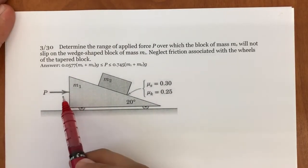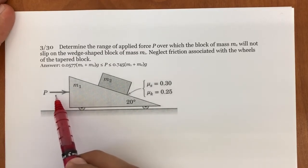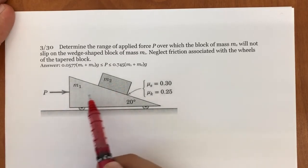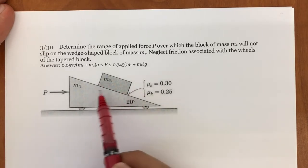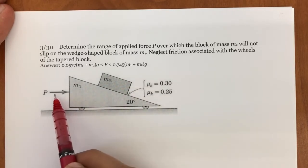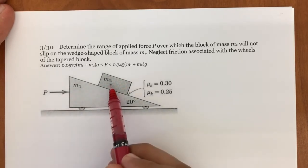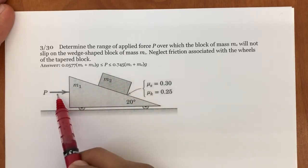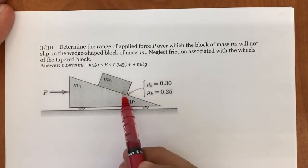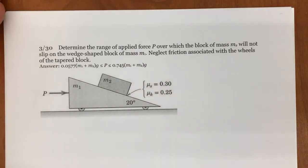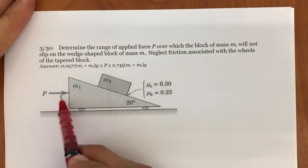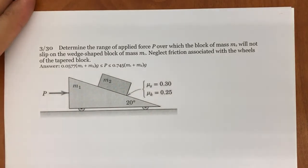We are asked to find the minimum and maximum force P to apply to this system without M2 sliding on M1. We don't want M2 to slide on M1. If we apply a lot of force, it's going to start to move up. If we apply a small force and the friction is not enough, it's going to slide down. So we want all the forces we can apply without this mass sliding on M1.